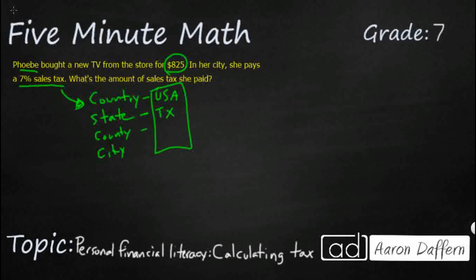So how do we calculate this? Well, we just need to make a basic multiplication problem. 825 times 7%. Now, this is not easy to multiply, so we need to change this into a decimal. When we change a percent to a decimal, what we do is we move the decimal twice to the left because this is out of 100% equals one whole.